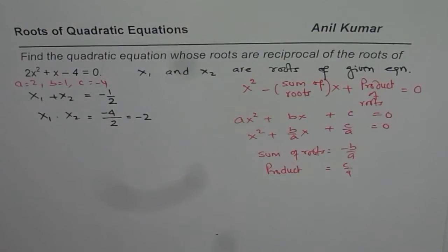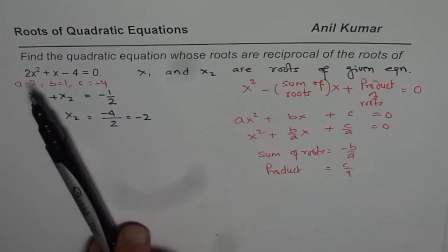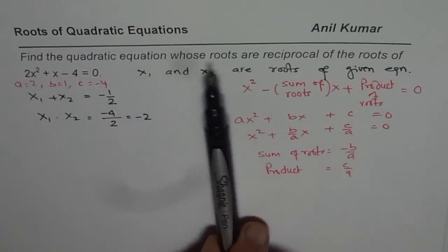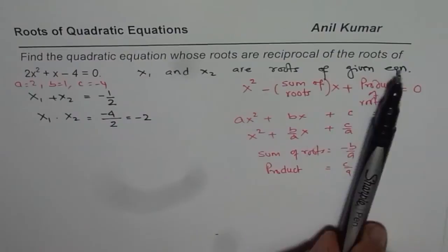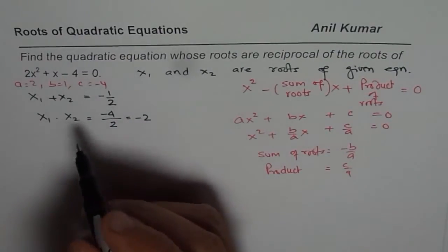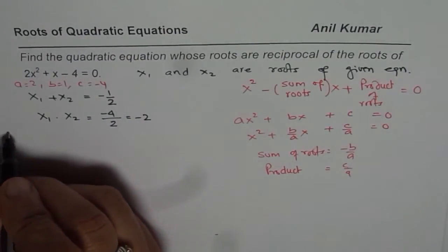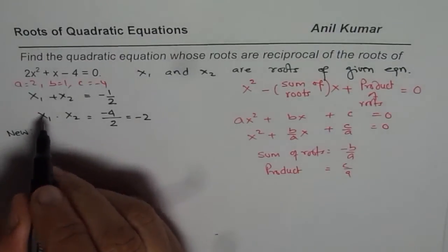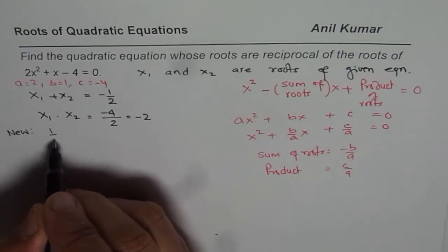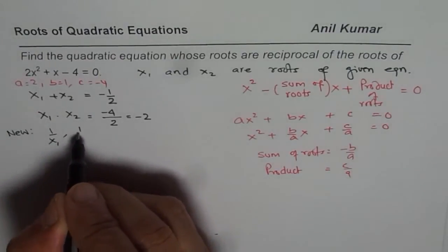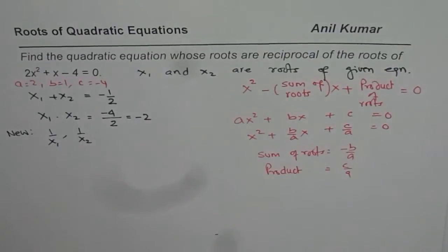Now let us look at the question once again. It says: find the quadratic equation whose roots are reciprocal of the roots of this equation. So the new equation which we want to find has roots that are reciprocal, meaning the roots are 1 over x1 and 1 over x2.